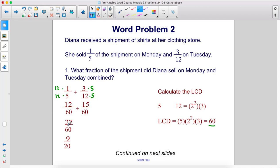12 plus 15 is 27. We leave the denominator as is, and that can actually be reduced to 9 twentieths.